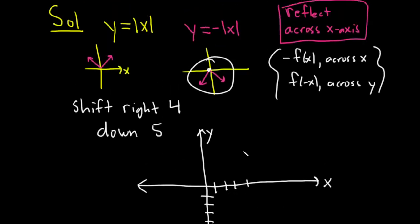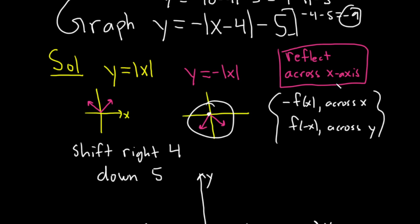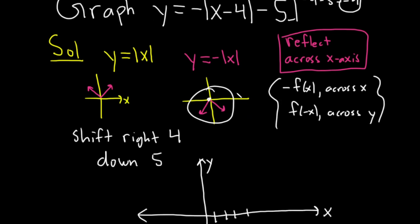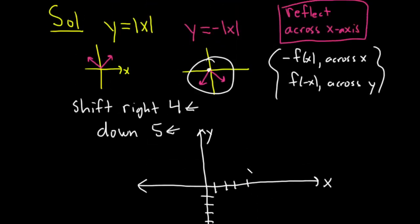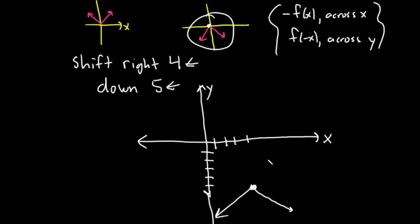In any case, the main idea in this problem is that you realize there is a reflection across the x-axis, you're shifting to the right, and you're shifting down. So you have both a vertical shift, a horizontal shift, and a reflection across the x-axis. That's a rough sketch of the graph. I hope this video has been helpful. Good luck.